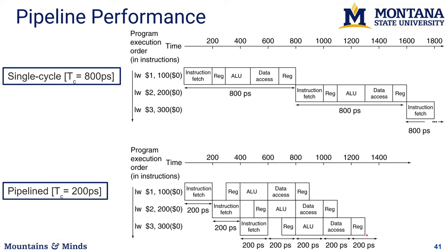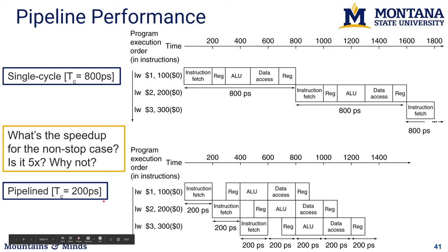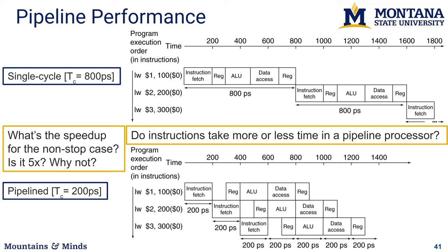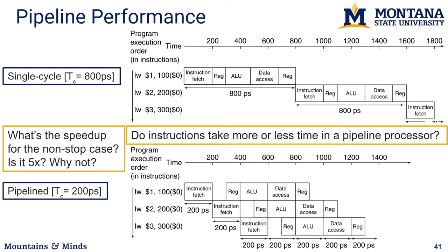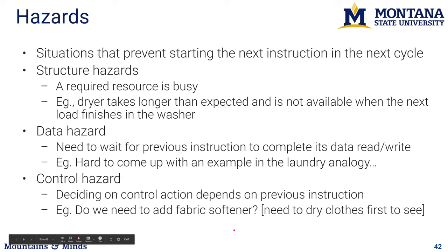The speedup is not quite 5x because some stages take longer and there's overhead managing pipeline stages as data passes between instructions. Instructions take less time on average, but a single instruction actually takes longer in a pipelined processor. What ends up slowing the pipeline is different hazards — situations where we can't start the next instruction in the next cycle. In our pipeline, every 200 picoseconds we're starting a new instruction, but that may not always be possible.